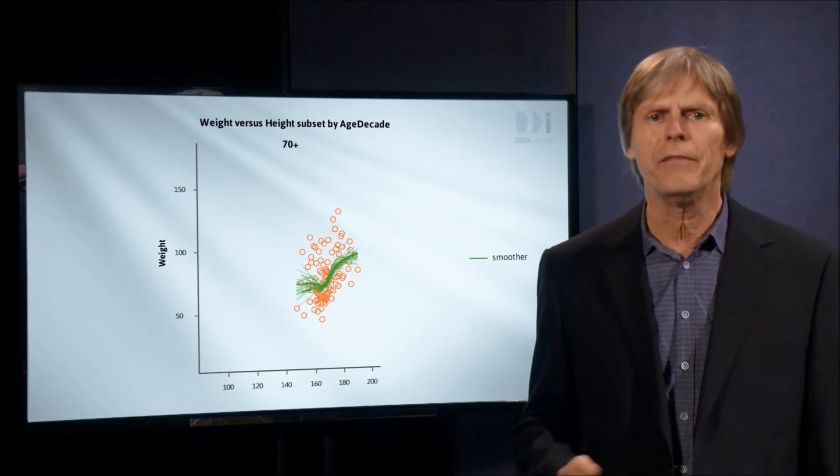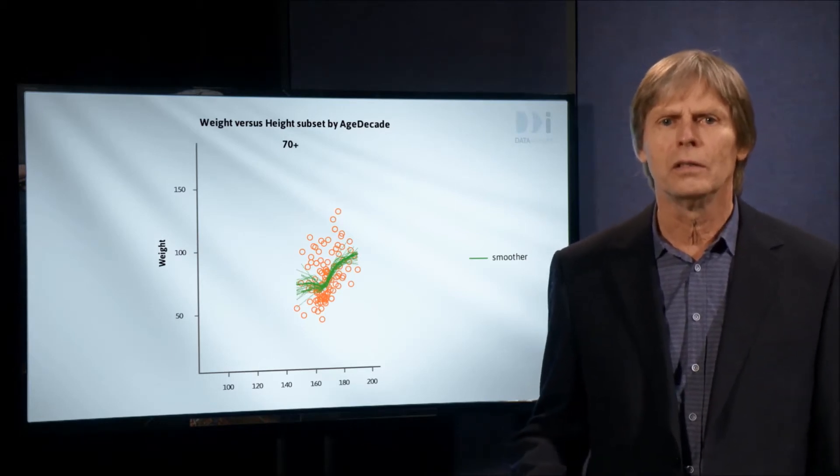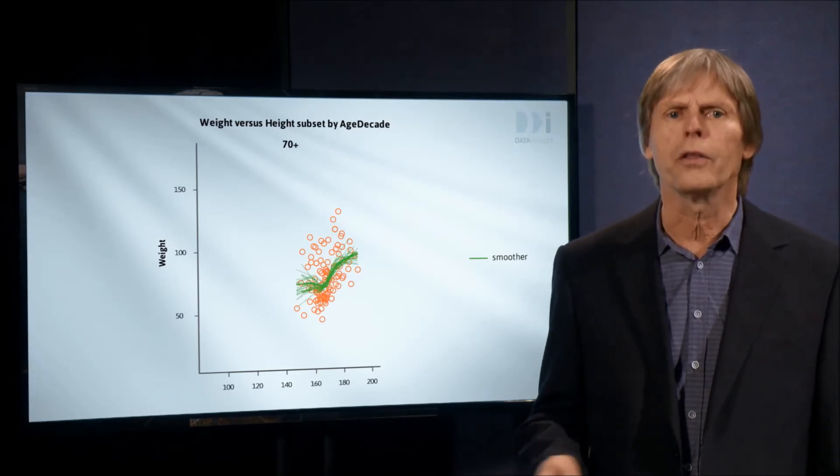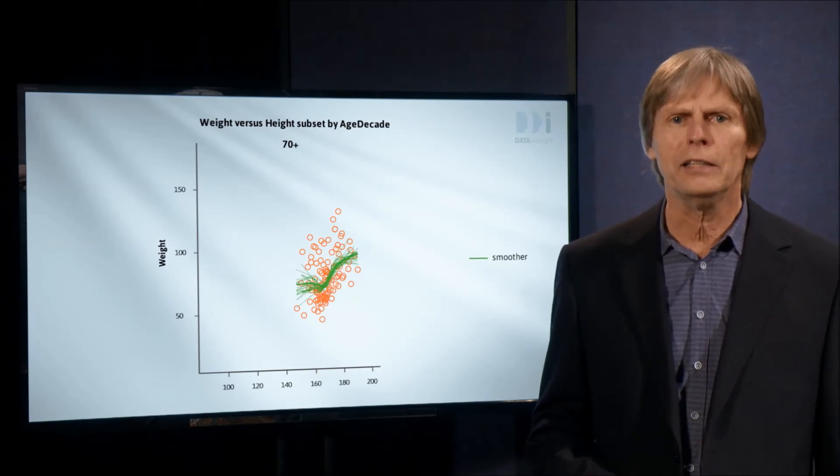Thus, subsetting gives us an alternative to color coding, as a way of investigating the effect of a third variable. For data exploration, it's not a matter of which is best. We often use both, in the hopes of triggering insights.